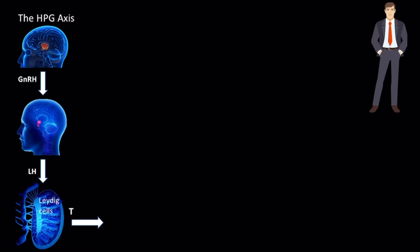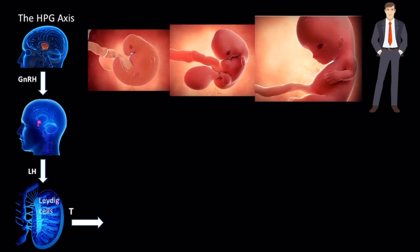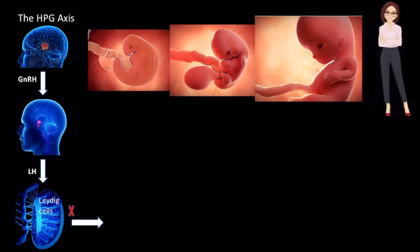Testosterone causes sexual differentiation of the embryo during gestation, thus driving the embryo to proceed down the male pathway of development. Without this androgenic hormonal signal, all embryos would follow the female pathway of development, thus all offspring would be female.